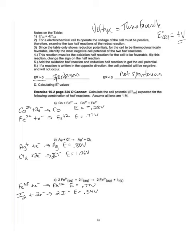I'd like you to pause the lecture and calculate the voltage of the cell for three combinations. To help you get started, below each one I went to the table on page five and wrote down all of the reduction potentials of all these different half reactions. Go ahead, calculate the voltage of each of these cell combinations, then restart the lecture and see if you got the correct values.